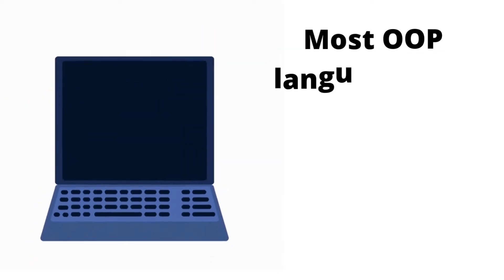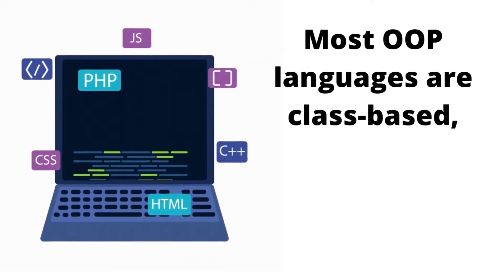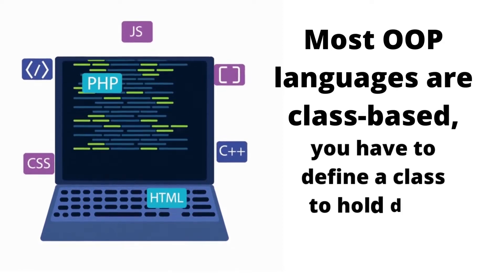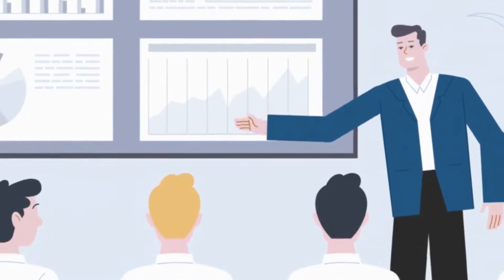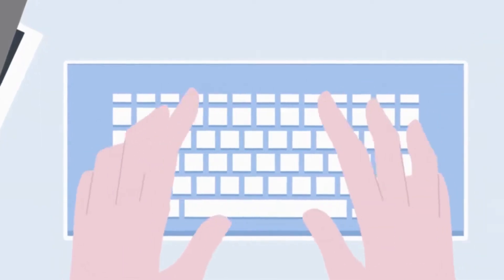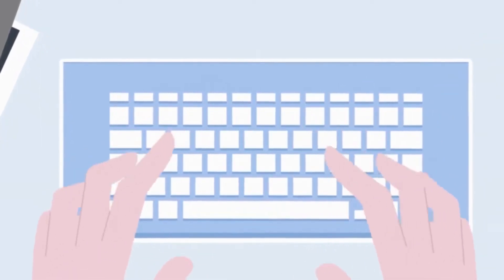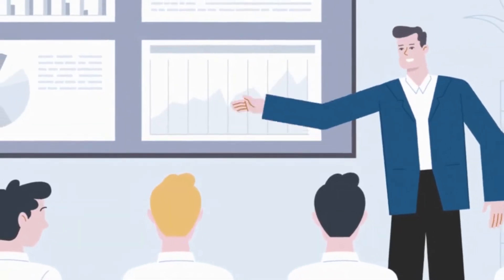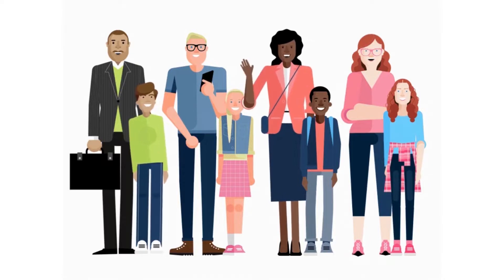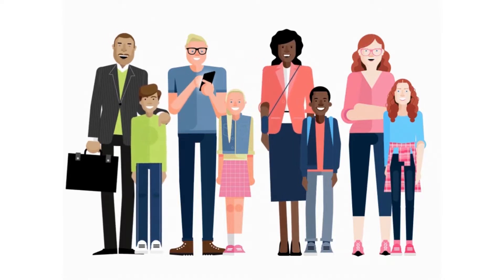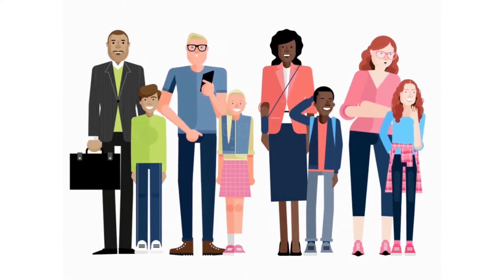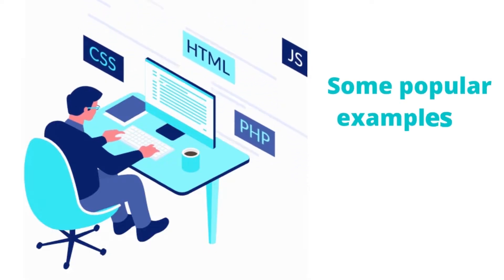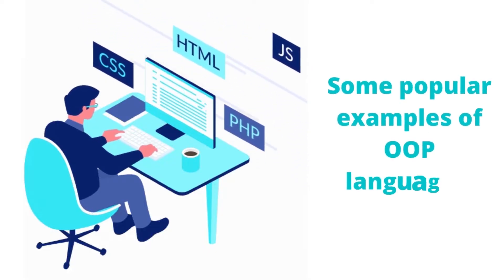Most OOP languages are class-based, meaning that you have to define a class to hold data attributes and functions. In simple words, a class is considered an entity. On the other hand, an object is an instance of the class. You can also create parent and child classes. One or more objects can be created in the same class and interact with each other. Some popular examples of OOP languages include Python, Java, and C++.